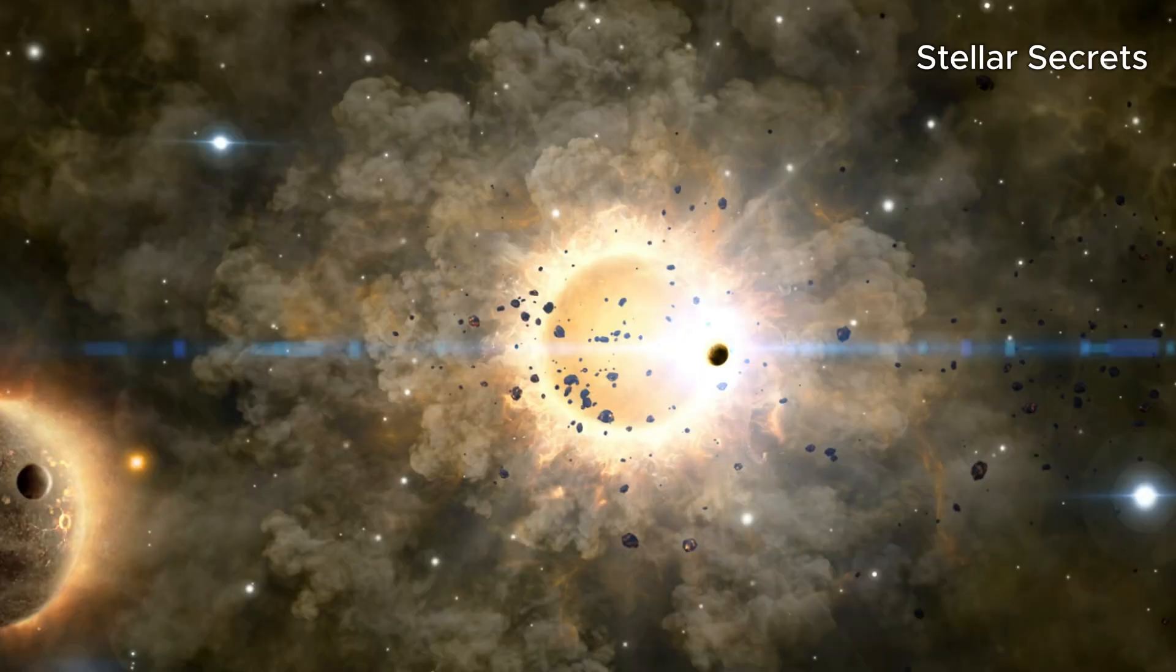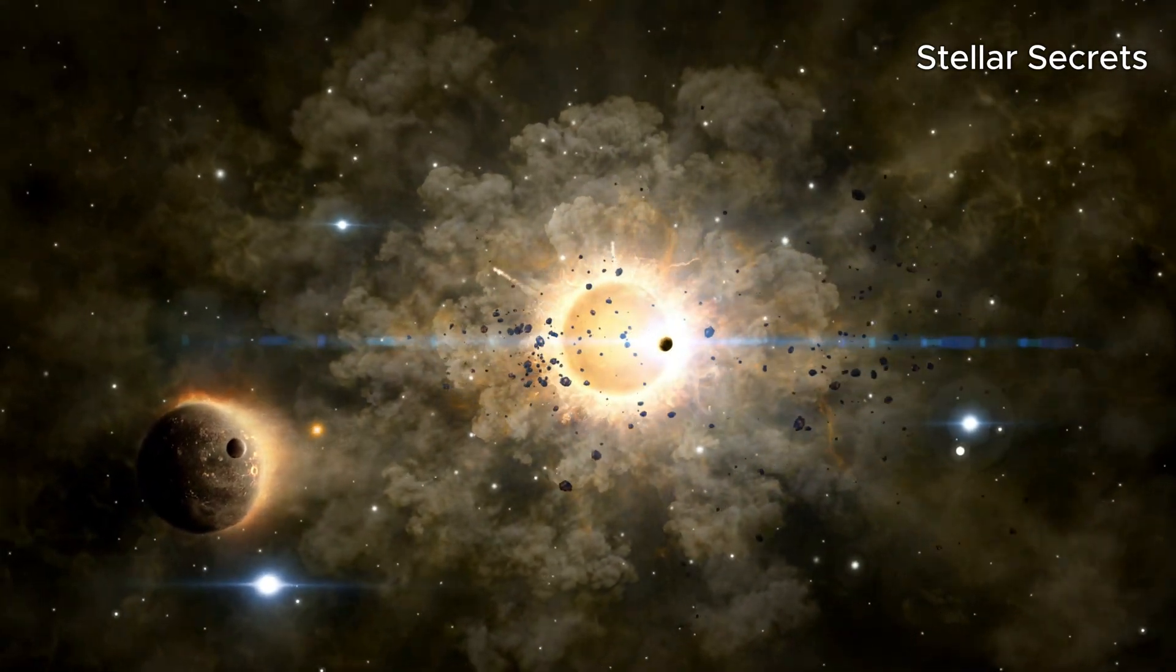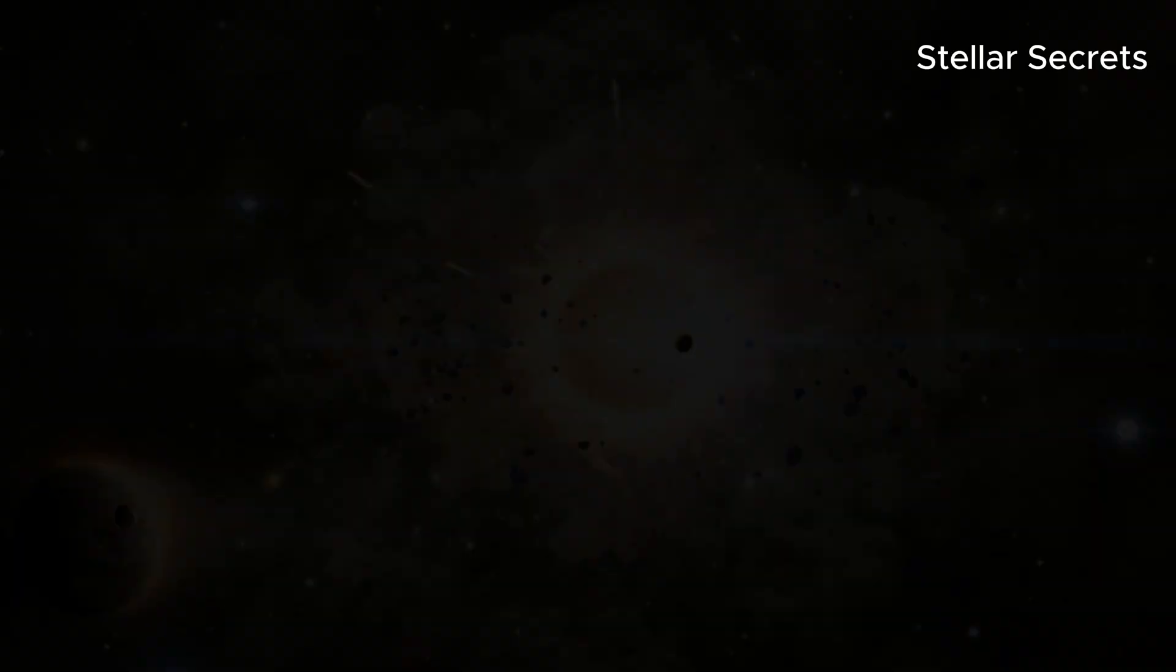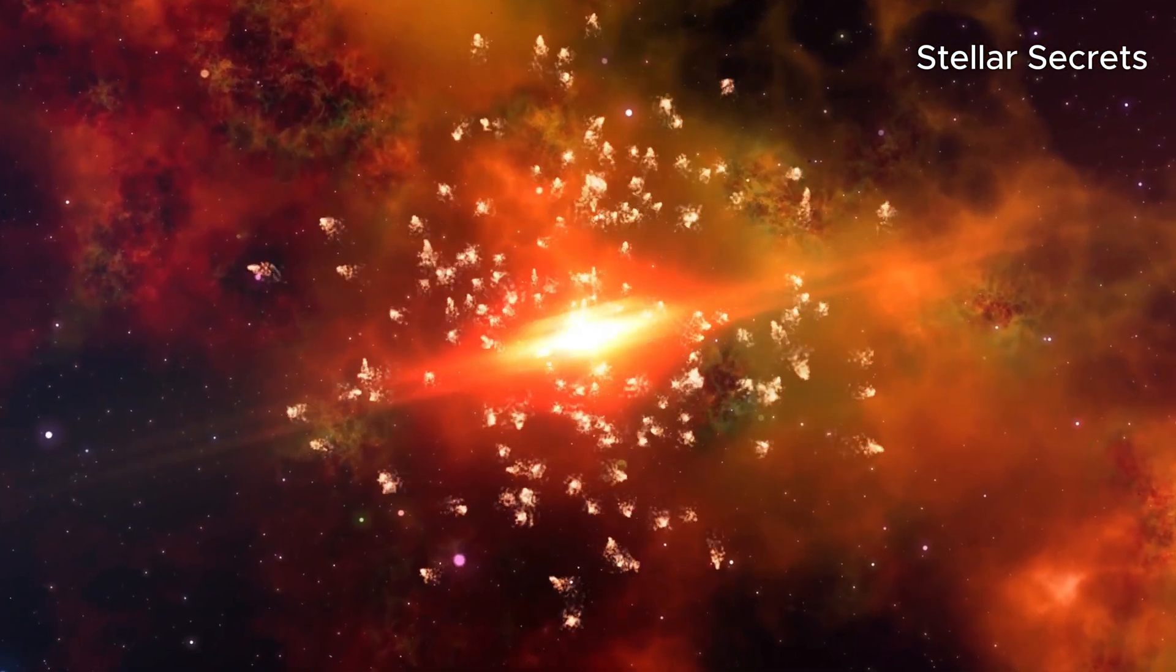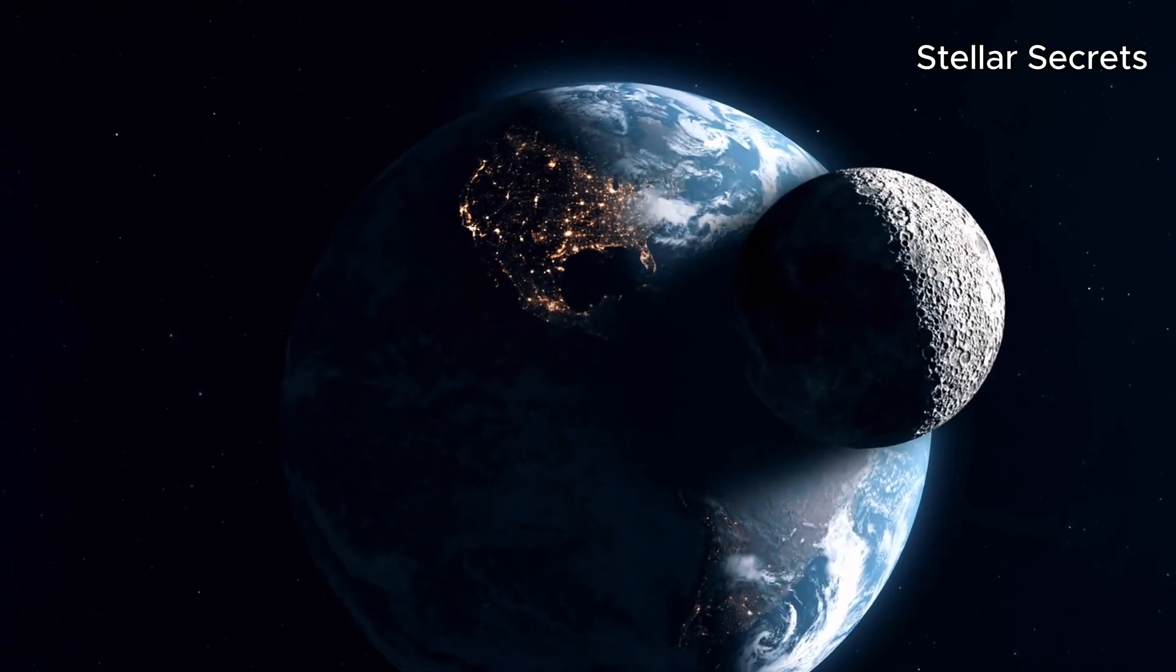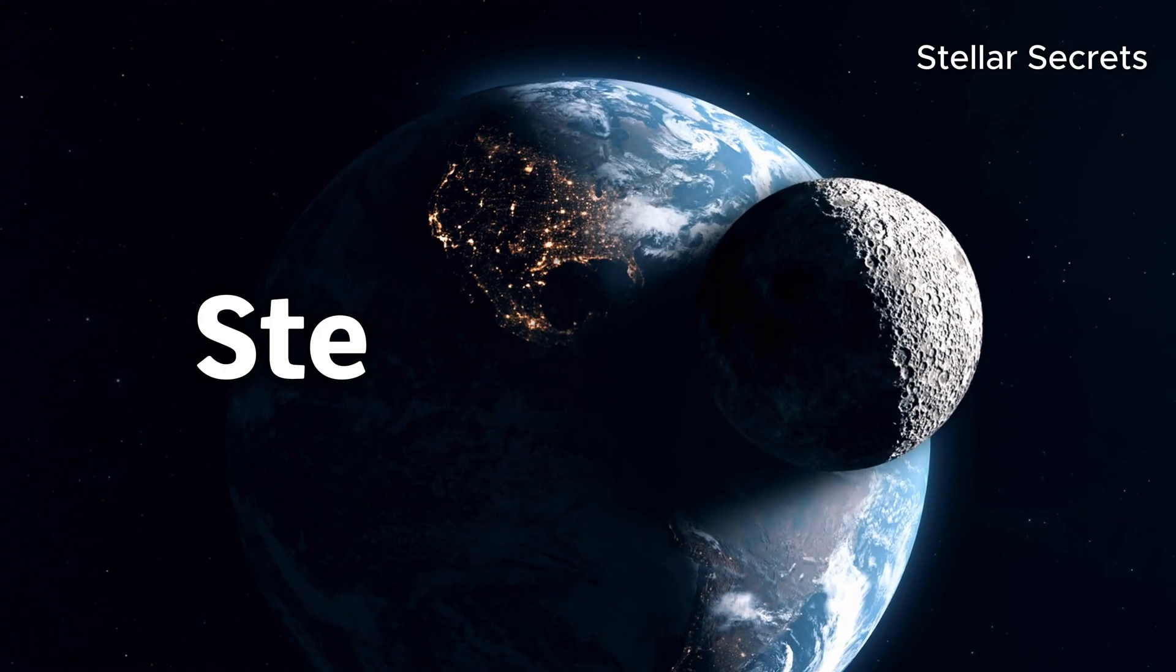These can disrupt the entire solar system, as well as any object that comes into their contact. But what if one of these rogue planets was coming straight for Earth? Then keep watching Stellar Secrets.